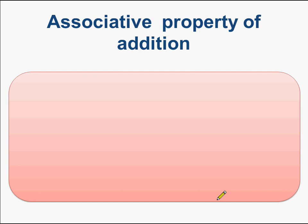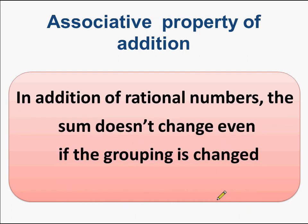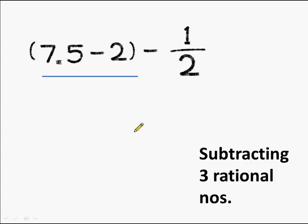What does it say? In addition of rational numbers, the sum doesn't change even if the grouping is changed. That means we get the same answer when the groups in which we are adding 3 or more rational numbers is changed.